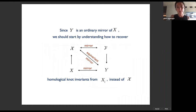Because small Y is an ordinary mirror of small X, we should start by understanding how to recover homological invariants from small X instead of big X. More generally, we'd like to understand the relation between categories of branes associated to the upstairs spaces versus the downstairs spaces.